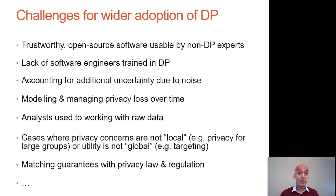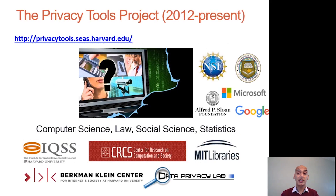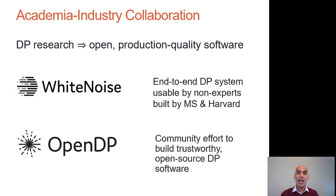There are a number of challenges to achieving this and our efforts address a number of them. We've been working towards this at Harvard in our interdisciplinary Privacy Tools Project since 2012, and we're excited to now be working with Microsoft on the White Noise system — designed to be an end-to-end system that allows non-experts to make effective use of differential privacy. We are also building on this experience to launch a larger community open-source software project called OpenDP, in which collaborations between academia and industry can bring ideas from the research literature into production-quality software.